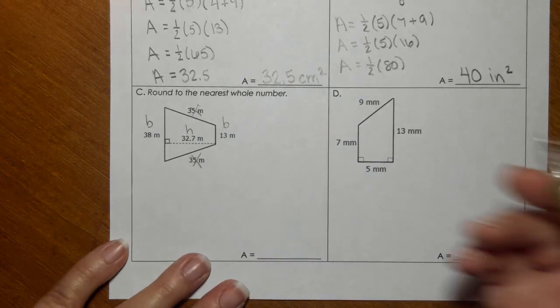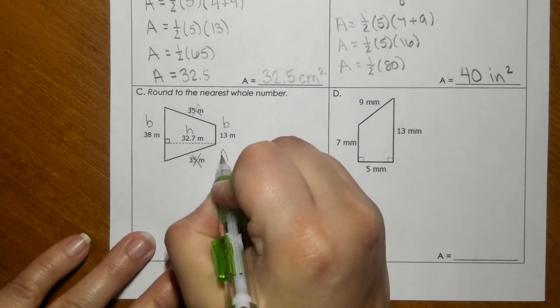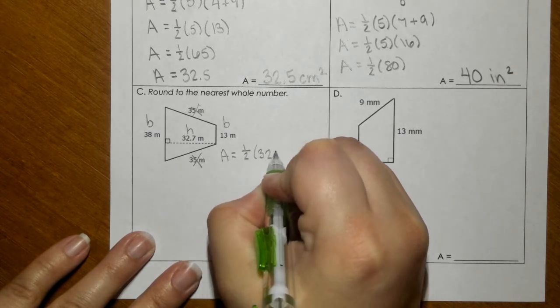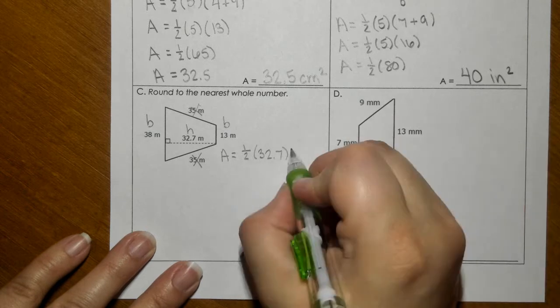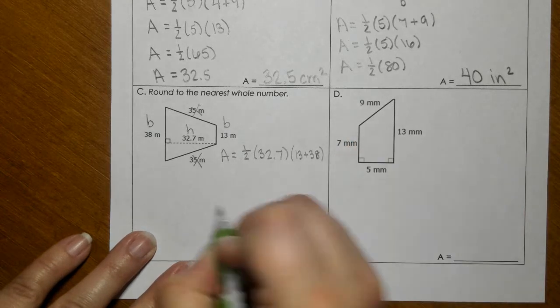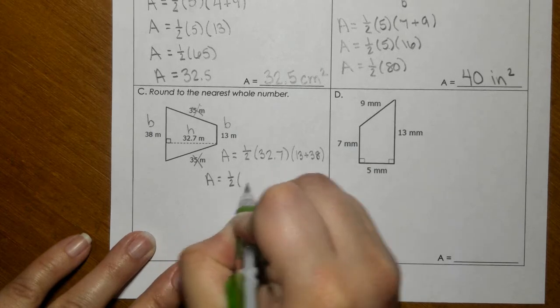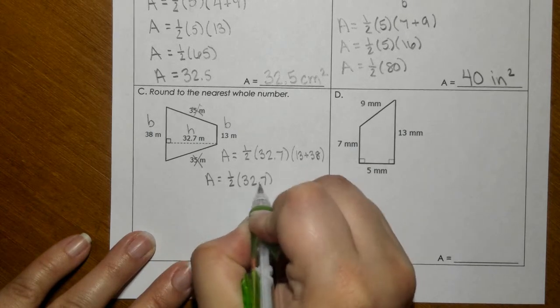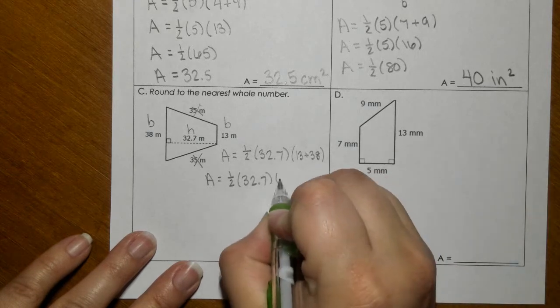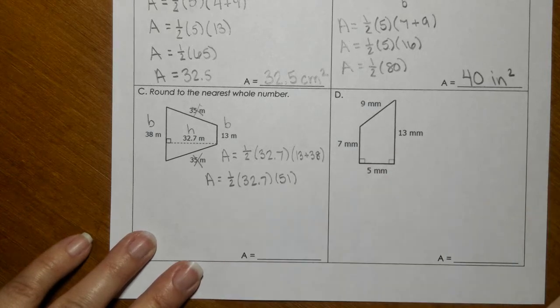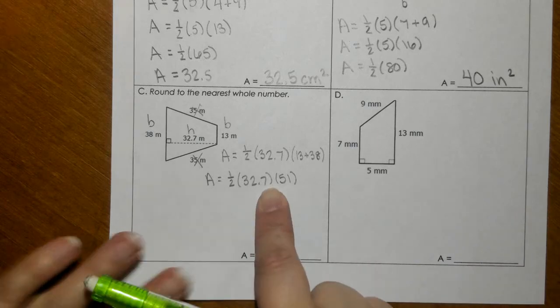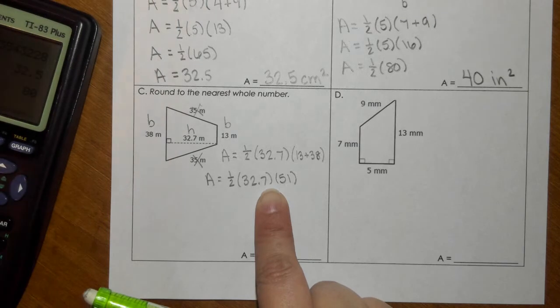So now, let's plug it into the formula. So there's your height, and then we have to add your bases. So if I add the bases together, we get 51. And if we multiply these two numbers here, we are going to get, let me work that out.